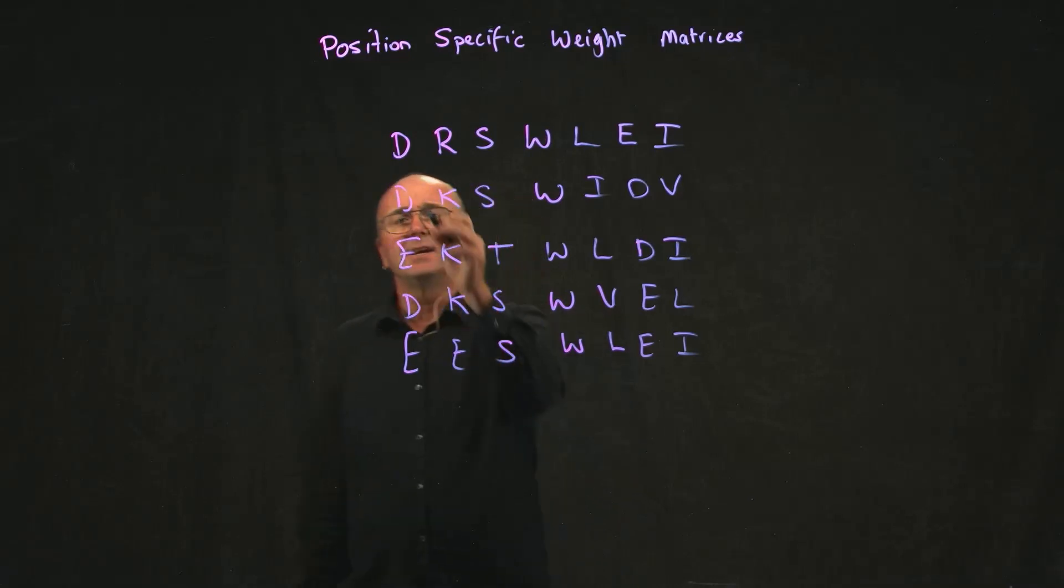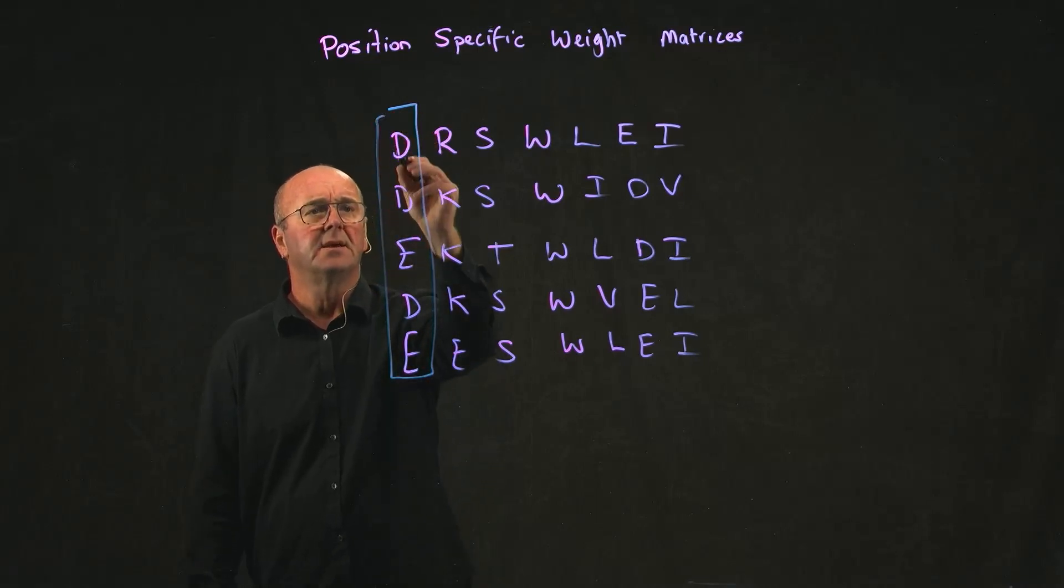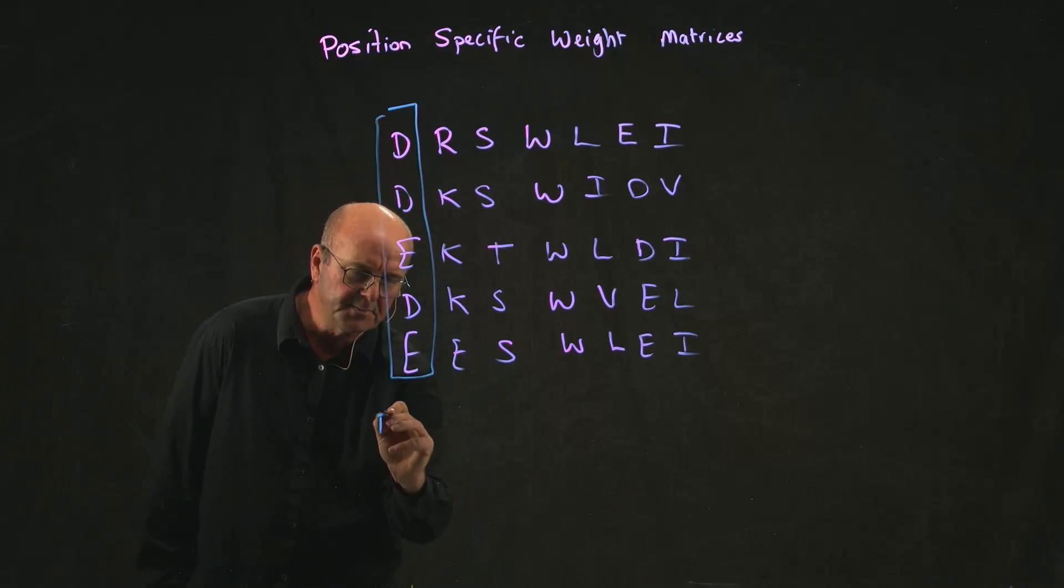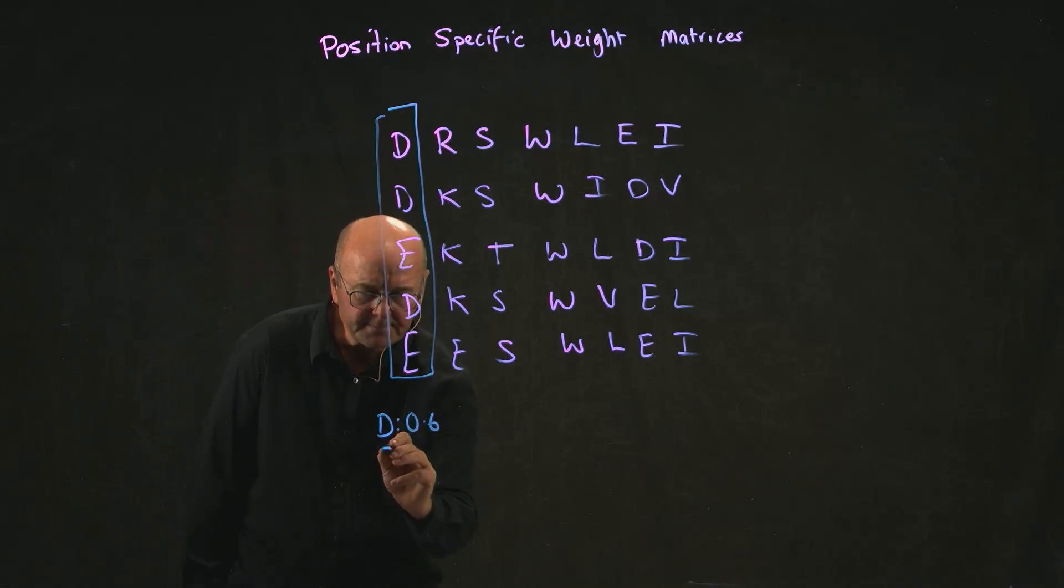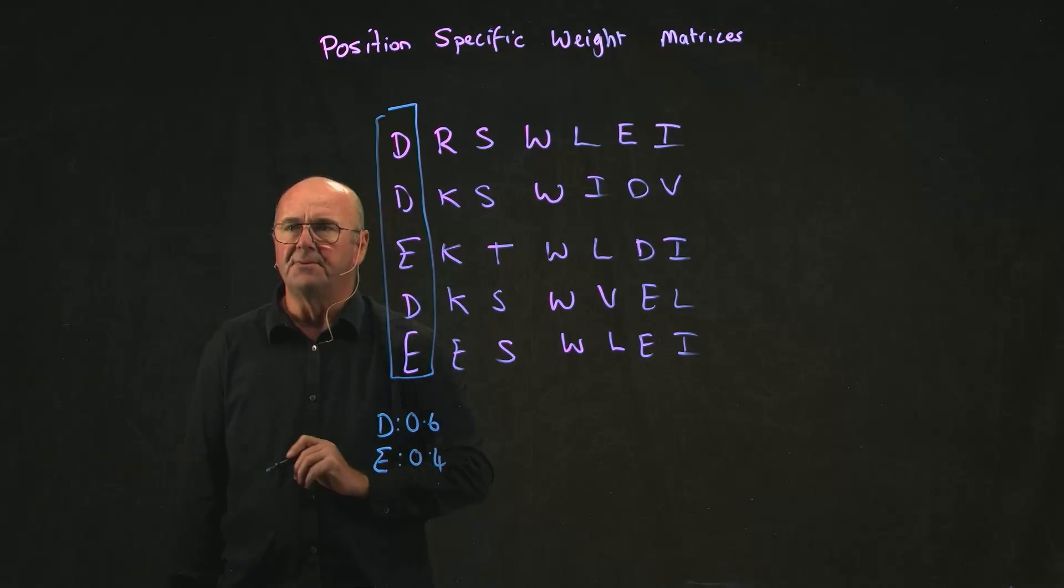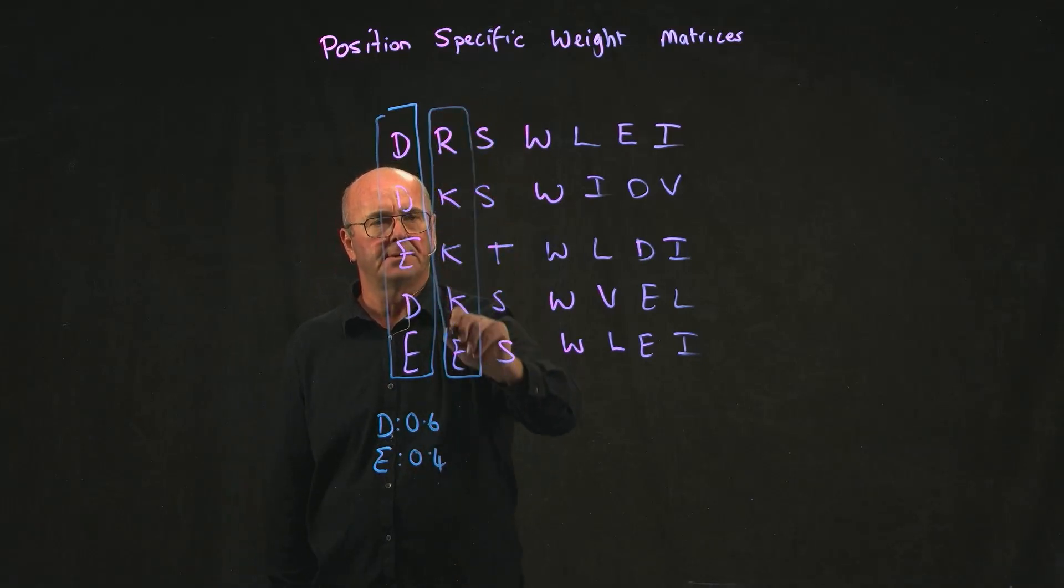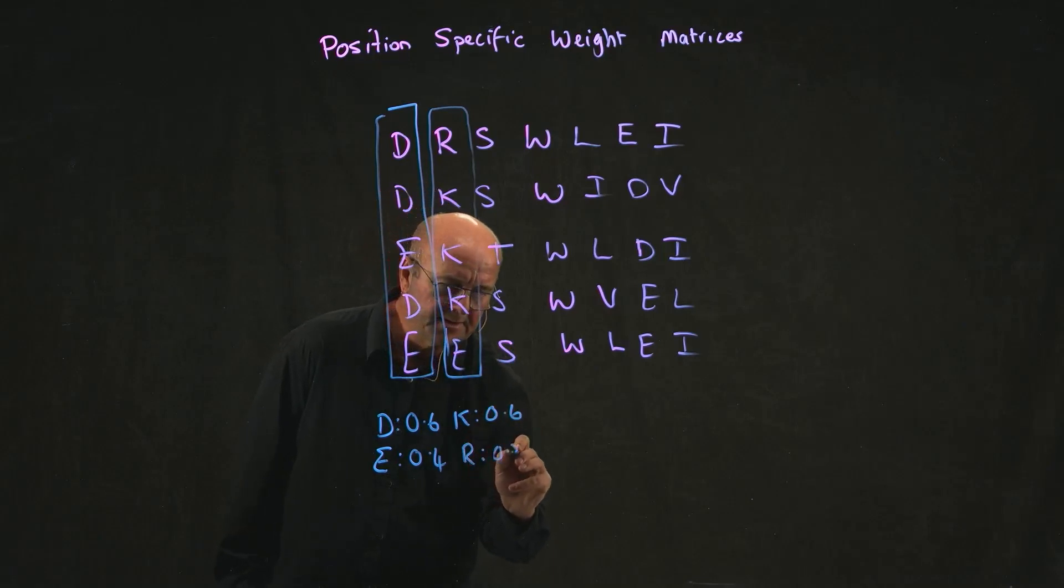So what I would do is take each position. At position one, we have three D's and two E's, so 60% of the time we have a D and 40% of the time we have an E. At position two, we have three K's, one R and one E. So 60% of the time we have a K and 20% of the time we have an E.